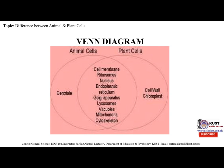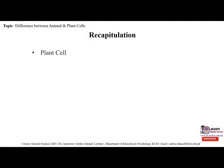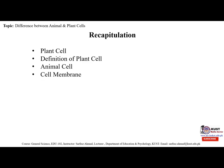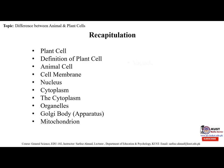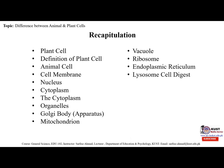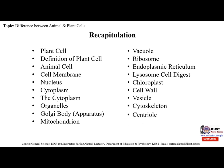The Venn diagram shows things that are common in both animal and plant cells. In recapitulation, we have studied: plant cells, animal cells, cell membrane, nucleus, cytoplasm, cytoplasm and organelles, Golgi body, mitochondrion, vacuoles, ribosomes, endoplasmic reticulum, lysosomes, chloroplast, cell wall, vesicles, cytoskeleton, centrioles, and the Venn diagram.